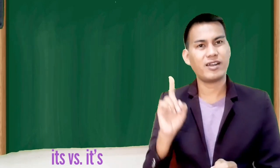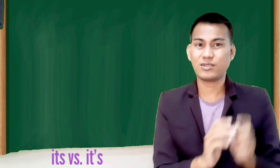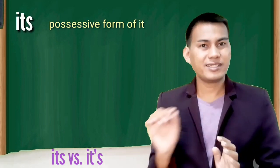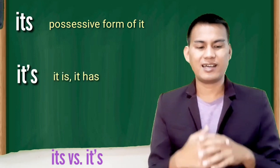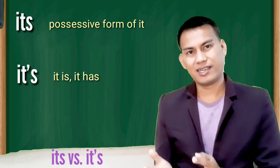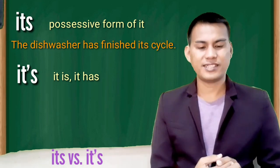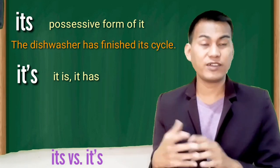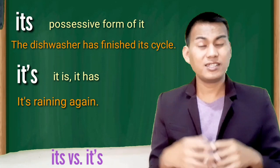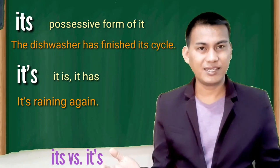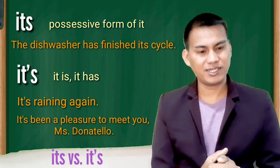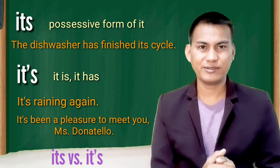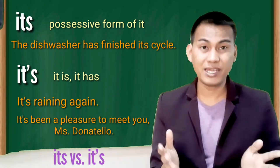Its without an apostrophe versus it's with an apostrophe before the S. Its is the possessive form of it. It's is a contraction of it is or it has. Example, the dishwasher has finished its cycle. It's raining again. Meaning, it is raining again. It's been a pleasure to meet you, Mrs. Donatello. Like, it has been a pleasure.